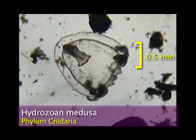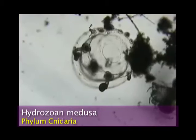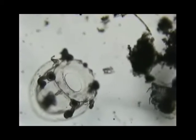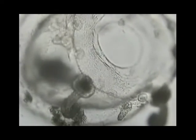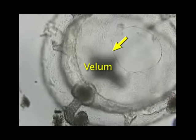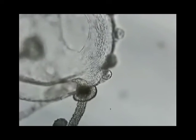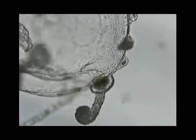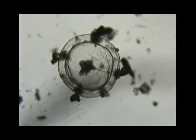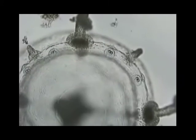This is the medusa of a hydrozoan, a type of cnidarian. This is not a true jellyfish because hydrozoan medusae, unlike true jellyfish, have a velum — a shelf of tissue around the edge of their bell. Notice the large tentacles covered with nematocysts. Around the edge of the bell are small sensory organs used for balance.